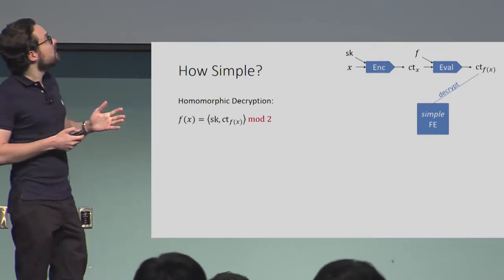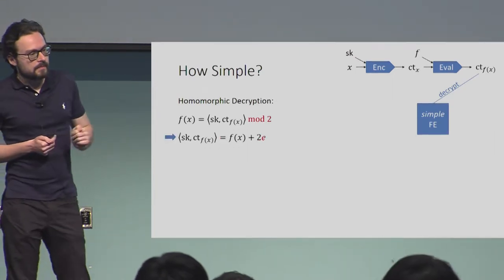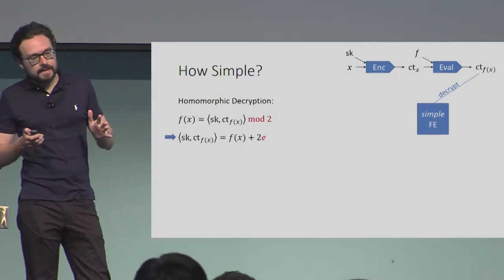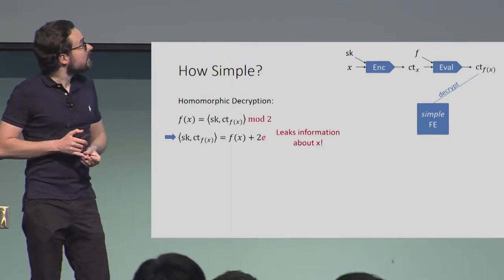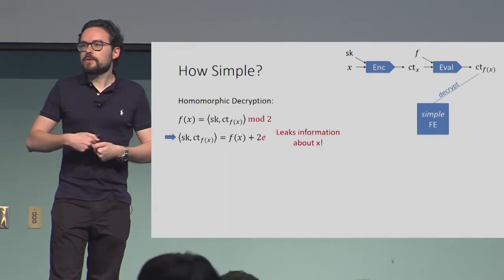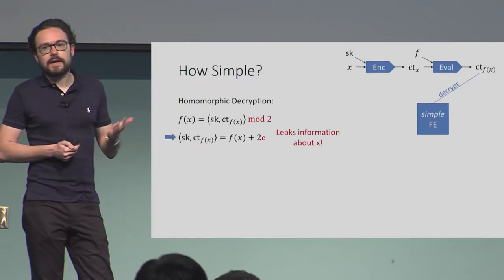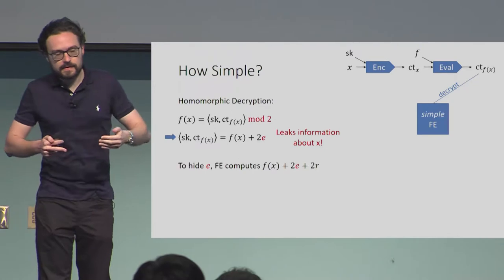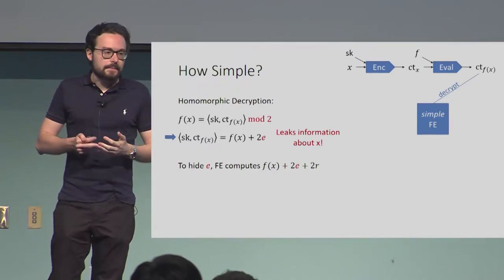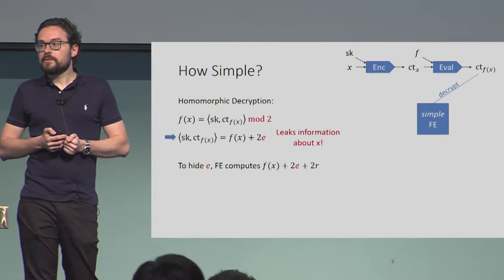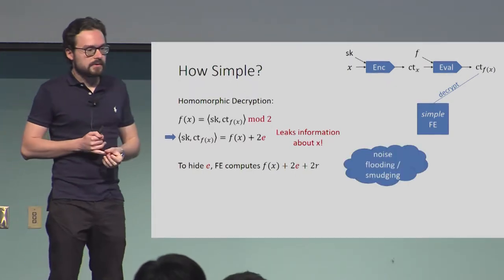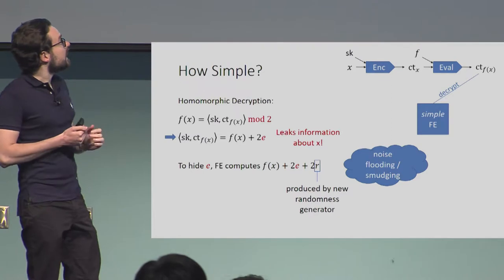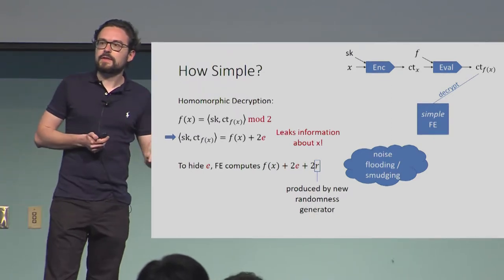What we can do is just not do the modulo 2 — only compute the inner product. If we do that, we obtain f of x, which we want, plus some noise. The issue is that this noise contains information about x. So we cannot give this out in public; we need to find a way to hide this noise to make this secure. The idea is to add some random value to it such that the sum hopefully hides this value e. This is an approach that has also been used before, known as noise flooding or noise smudging.